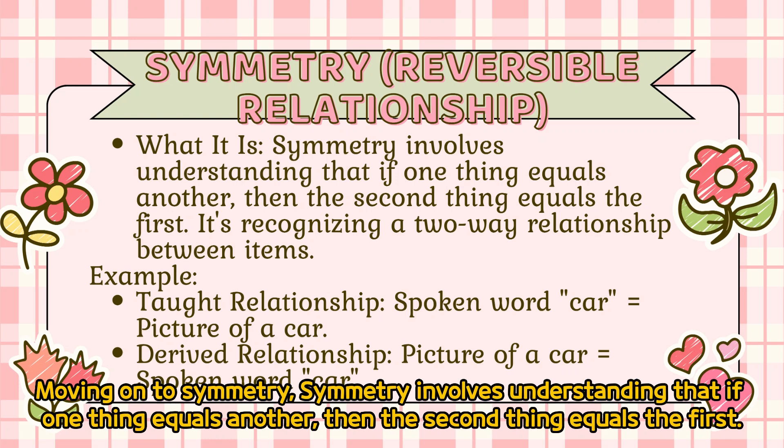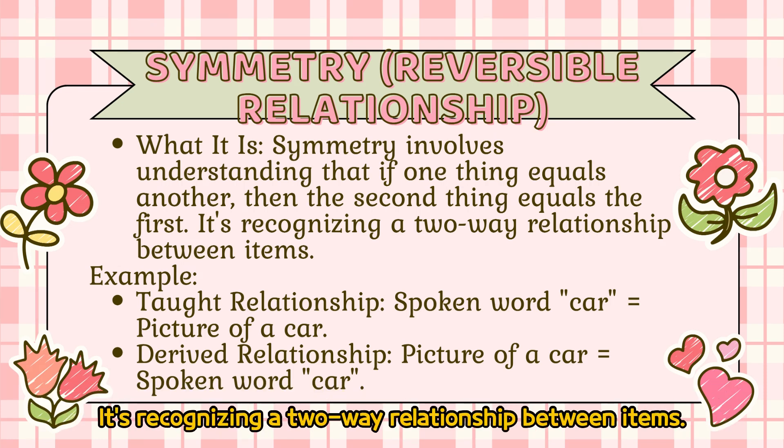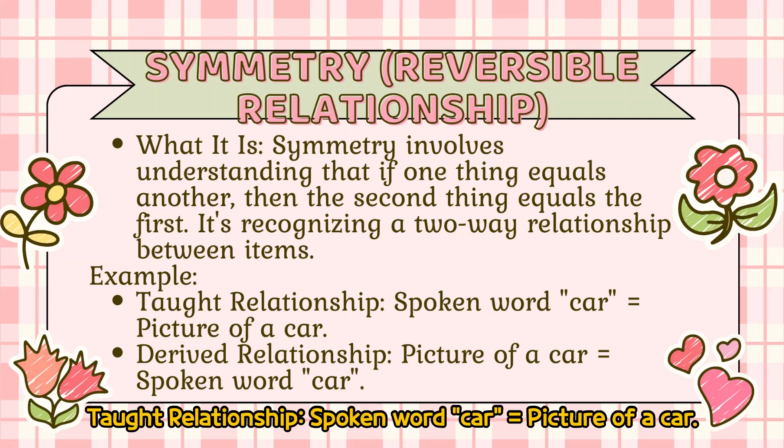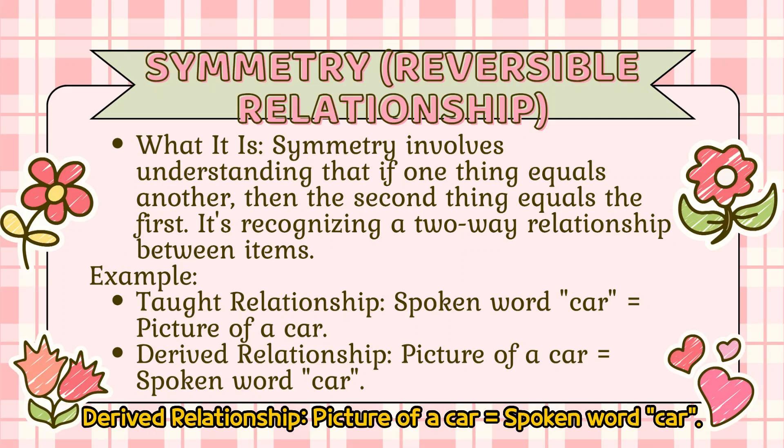Moving on to symmetry. Symmetry involves understanding that if one thing equals another, then the second thing equals the first. It's recognizing a two-way relationship between items. For example, a taught relationship might be: spoken word 'car' corresponds to a picture of a car. The derived relationship is then: picture of a car corresponds to the spoken word 'car.'